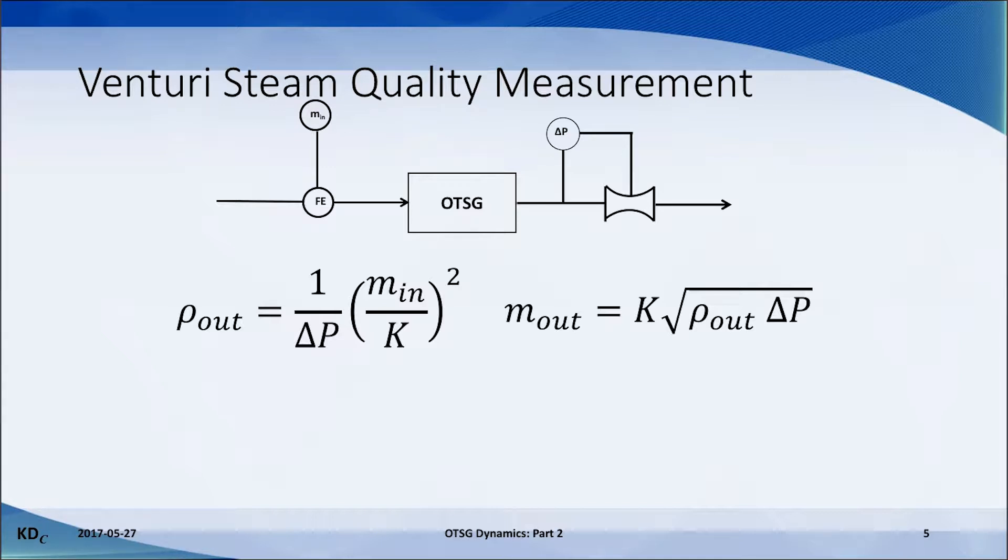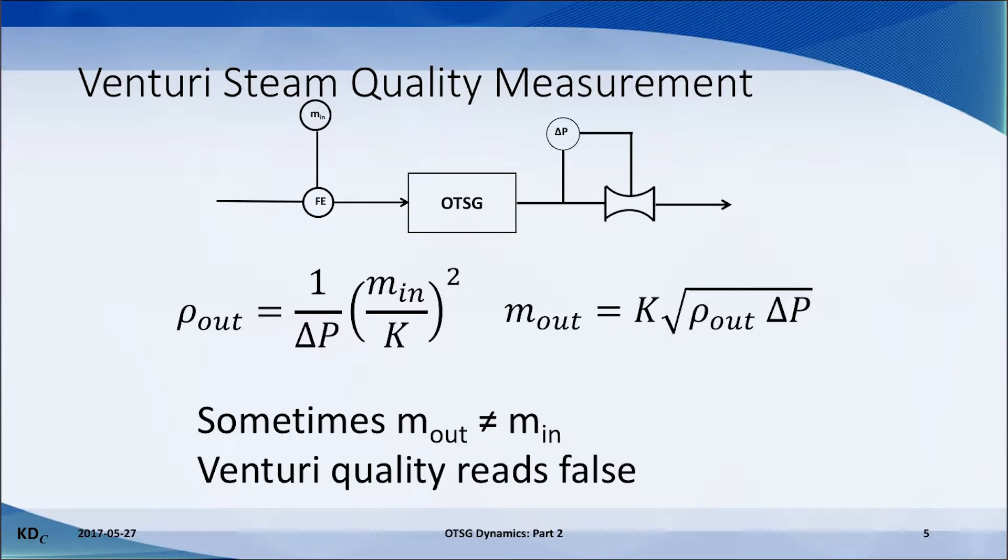However, if the mass flow rate out of the pass is not equal to the mass flow rate into the pass, this inferred measurement will read false and give us the wrong density, and hence the wrong steam quality. There are several different correlations that are typically used to infer steam quality, but they all have the same general form as the simple one shown here.